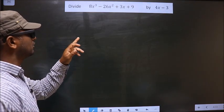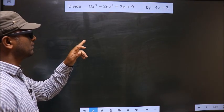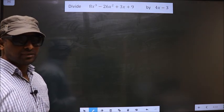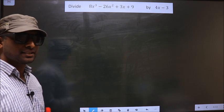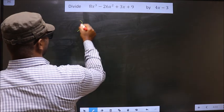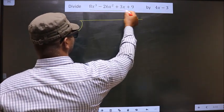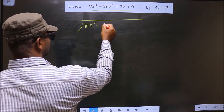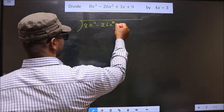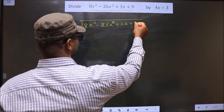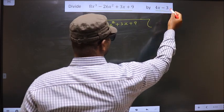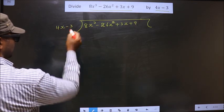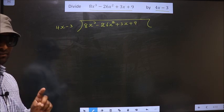Divide 8x³ minus 26x² plus 3x plus 9 by 4x minus 3. To divide polynomials, first we should frame it in this way. This is called the dividend, which we write here: 8x³ minus 26x² plus 3x plus 9. This is called the divisor, which we write here: 4x minus 3. This is step 1.